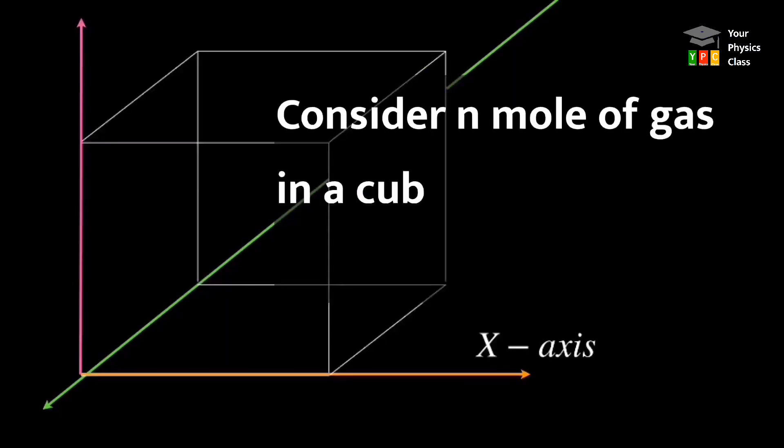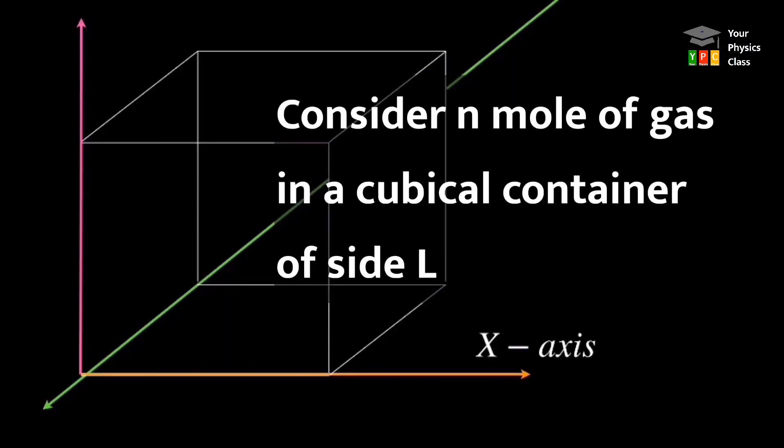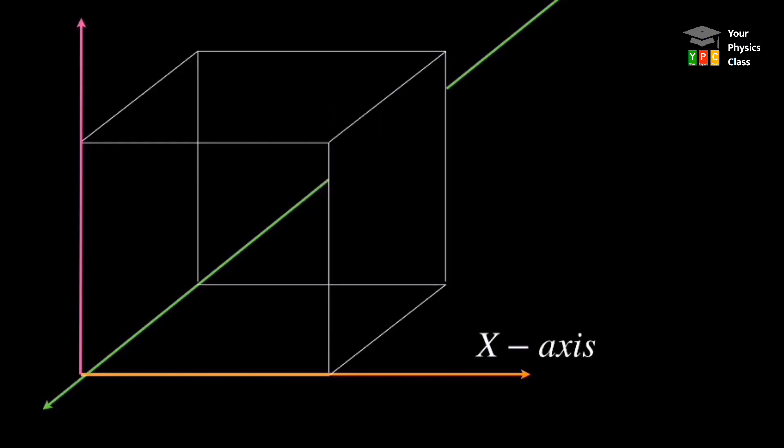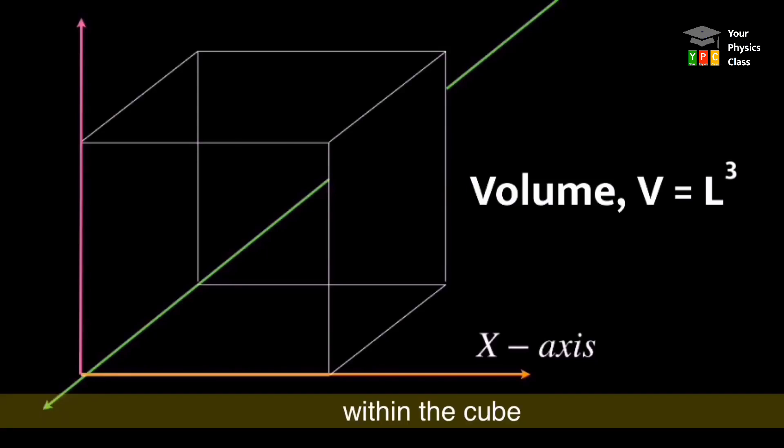Maan lijiye, ek cubical container mein hum ne n mol of gas le li. Jiska side of cube L hai, to cube ka volume L cube hoga. Aur dosto, gas ka volume bhi L cube hi hoga kyunki gas occupies complete space within the cube.